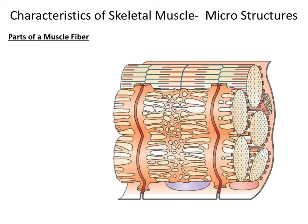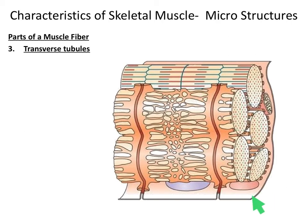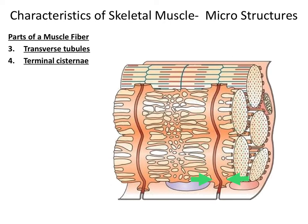The next microstructure of a muscle fiber is an invagination of the sarcolemma called the transverse tubule. The sarcolemma starts to turn inward on itself, forming a tubule or a passageway — this is the T-tubule. Adjacent to the transverse tubules are the terminal cisternae. On the terminal cisternae, you will find voltage-gated calcium ion channels. As an action potential travels down the T-tubule and across the terminal cisternae, that action potential will open up those channels and allow calcium ions to diffuse out of the terminal cisternae.